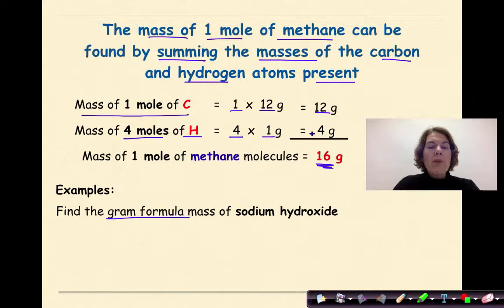Let's look at an example. Find the gram formula mass of sodium hydroxide. We know the formula for sodium hydroxide is NaOH. When I look at this formula, I can see that I have one Na, and the atomic mass of sodium is 23. So one times 23 is 23 grams.